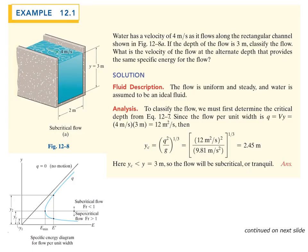Example 12.1: Water has a velocity of 4 meters per second as it flows along a rectangular channel. If the depth of the flow is 3 meters, classify the flow. Also find the velocity at the alternate depth that provides the same specific energy. First, calculate small q — the flow rate per unit width. In this example, velocity and depth are given, so q equals velocity times depth, giving q = 12 square meters per second. Note that if big Q were given instead, you would divide by the channel width.